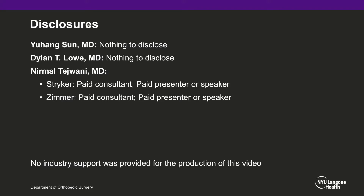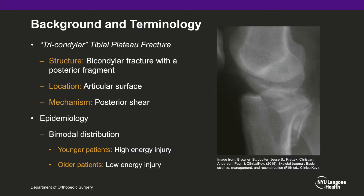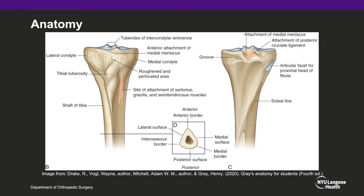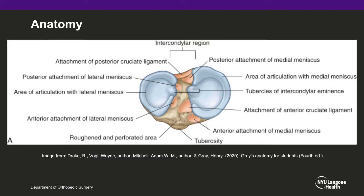A tricondylar tibial plateau fracture is defined as a bicondylar tibial plateau fracture with a superimposed posterior fragment. These occur at the posterior aspect of the tibial plateau and are typically caused by a posterior shearing force. Tibial plateau fractures have a bimodal distribution, presenting in a younger population with a higher energy injury or an older population with a lower energy injury. The tibial plateau is a major weight bearing surface within the body, and there are numerous soft tissue structures in close association with it, leading to a high rate of soft tissue or ligamentous injury whenever a tibial plateau fracture occurs.